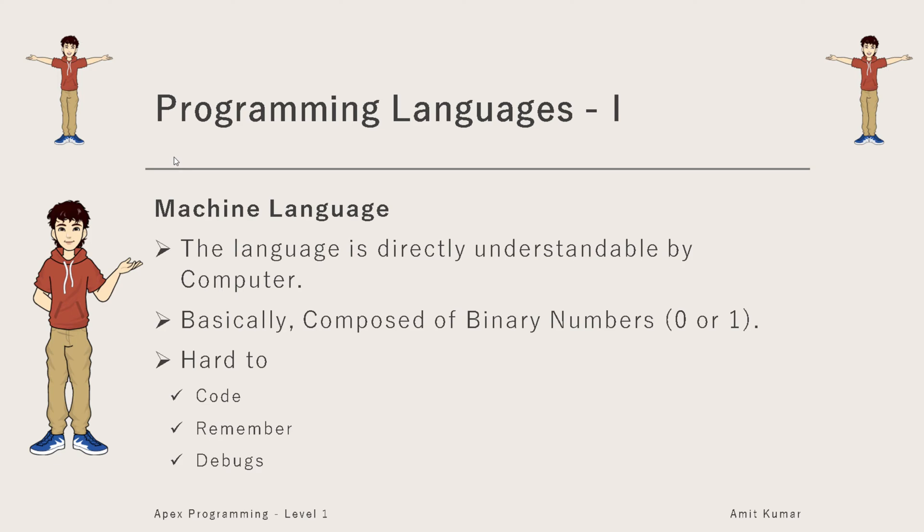And of course, it's very hard to debug. Now what is debug? In programming or in computers, bugs are known as errors and removing bugs is known as debugging. Since it's a hard language to code and remember, it is an error-prone language. There are a lot of chances of committing errors, and it's very hard to find the error and remove it. So debugging is also difficult in machine language.